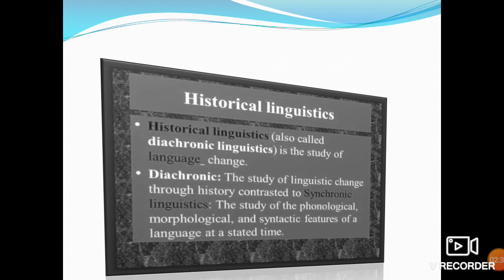Historical Linguistics, also called Diachronic Linguistics, is the study of language change. Diachronic refers to the study of linguistic change through history, contrasted to synchronic linguistics — the study of the phonological, morphological, and syntactic features of a language at a stated time.